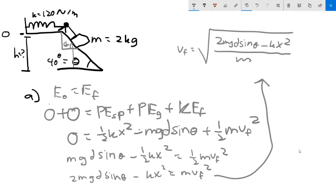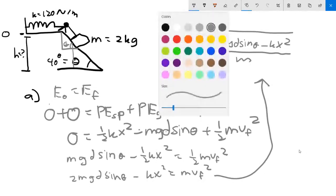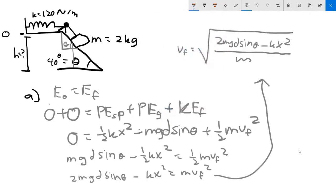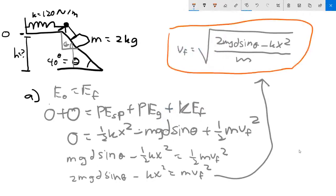That is v_final and that is your answer for part a, which asks for the final velocity when the box is down at that position.